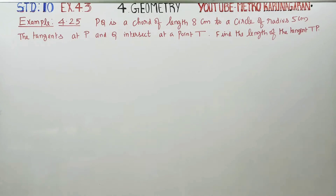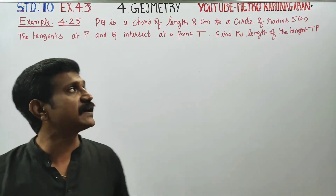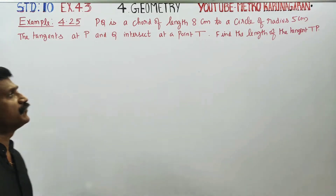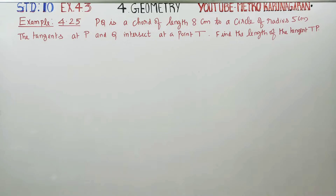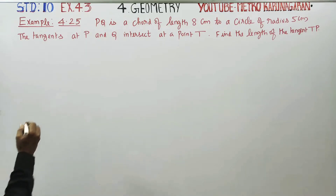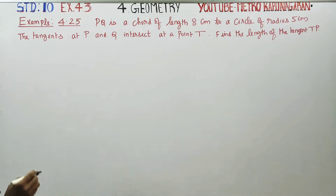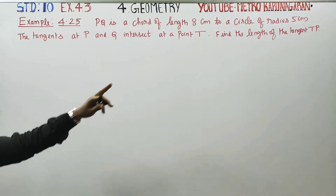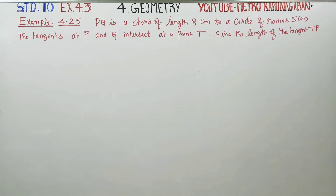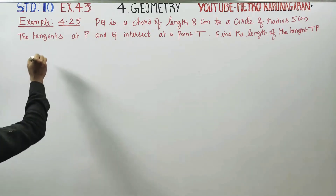Dear 10th standard students, I am Metro Karanagaran. In example 4.25, PQ is a chord of length 8 cm to a circle of radius 5 cm. The tangents at P and Q intersect at a point T. Find the length of the tangent TP.